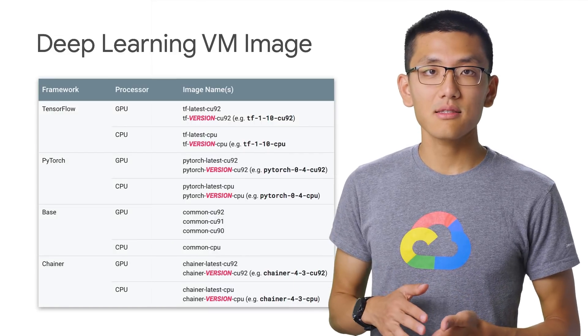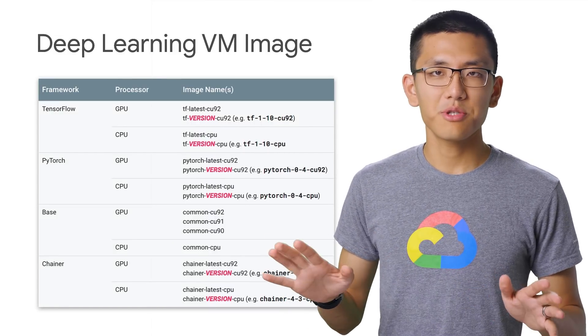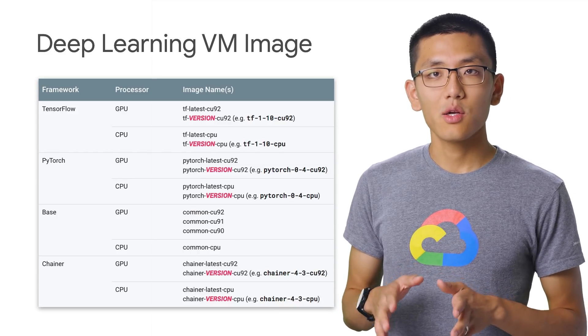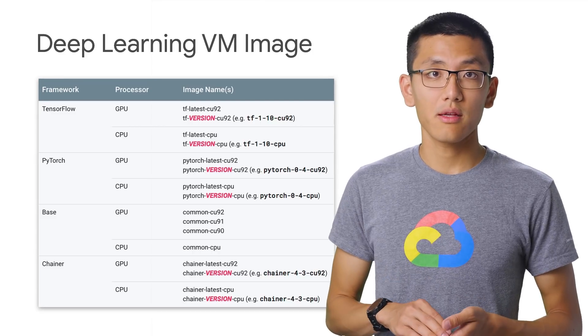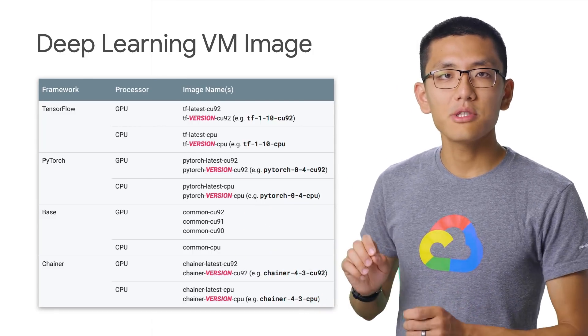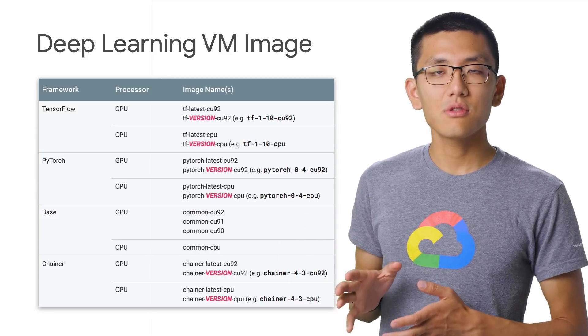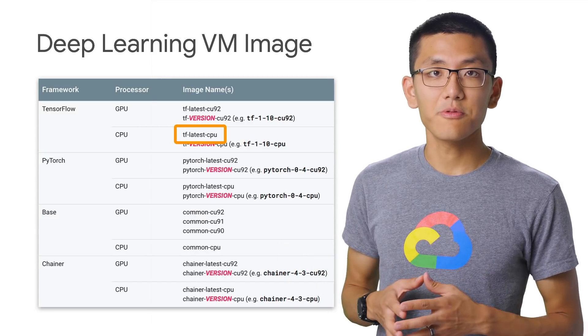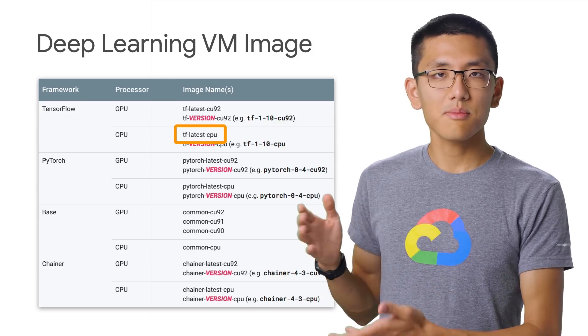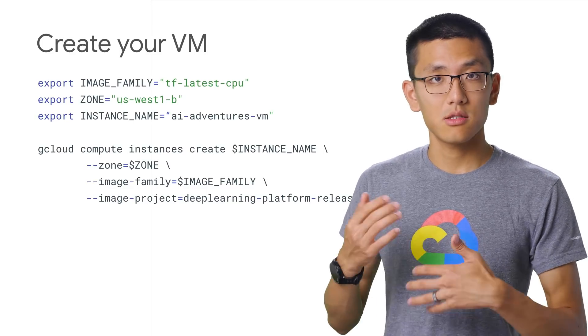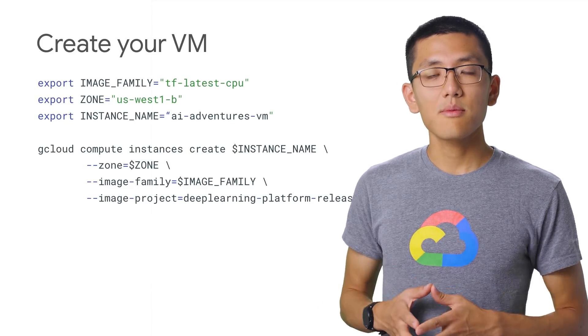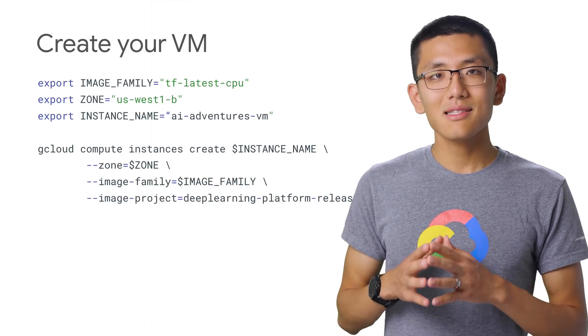Let's take a look at how you can create these VMs using the gcloud command line tool. We'll start with the simpler case of a virtual machine with only CPU, no GPU. In this case, we just need to decide what zone to put our VM in and what machine learning library we want to use with it. Here's the list of all the available images to choose from. Let's say we do tf-latest-cpu. Once you run this command, it will take a moment to provision the machine and install all the software packages. Once the VM is up and running, you can SSH into the machine.